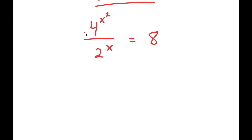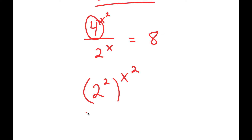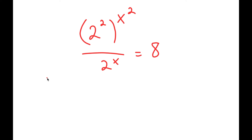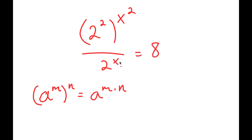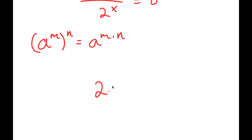What I'm first going to do is start by rewriting 4 as 2 squared. So I have 2 squared to the power of x squared over 2 to the power of x is equal to 8. And if I have something in the form a to the power of m to the power of n, this is equal to a to the power of m times n. So 2 to the power of 2 to the power of x squared is going to equal 2 to the power of 2 times x squared.